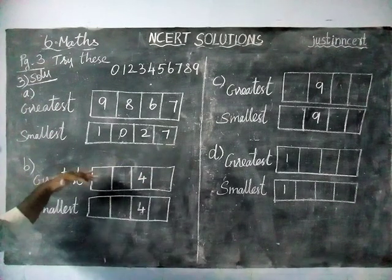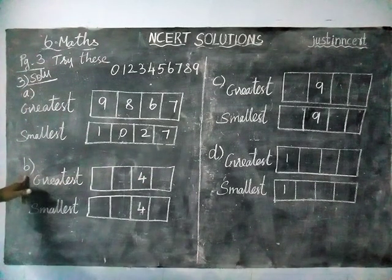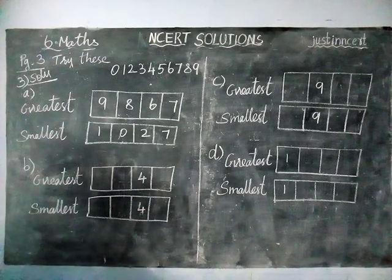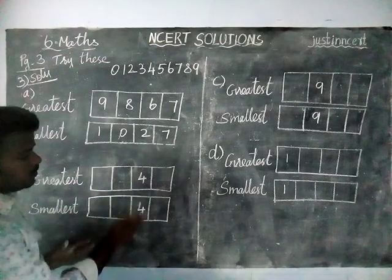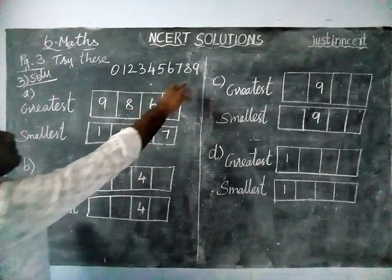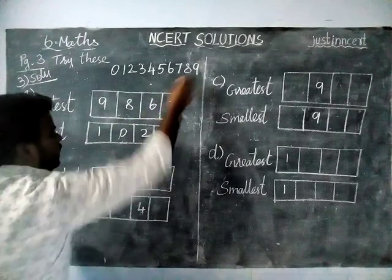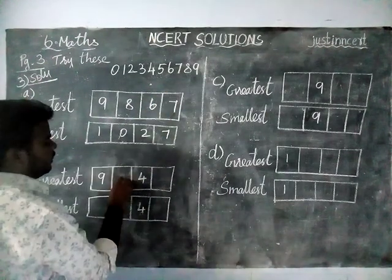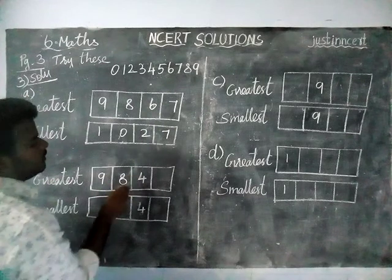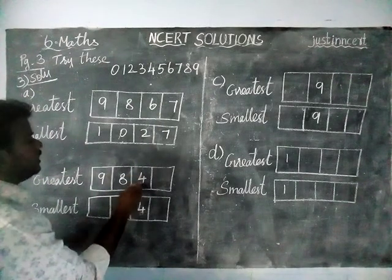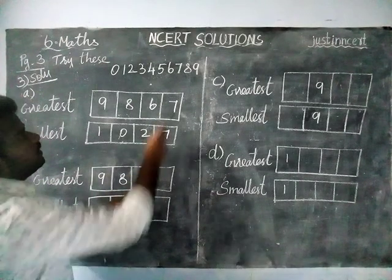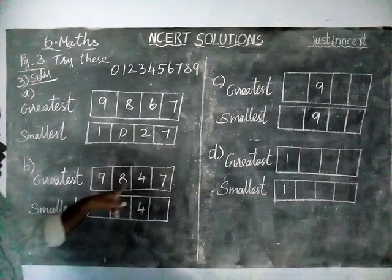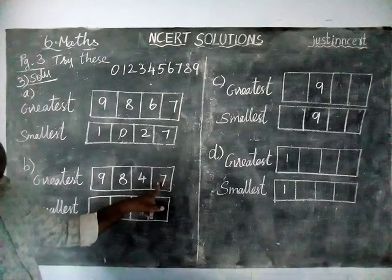Now we are going to solve option B. In option B, listen carefully — the greatest number 4 should be in the tens place. So in this the greatest number is 9, next greatest number is 8, next 4 is already given in the condition, next greatest number is 7. So 9,847 is the greatest number.